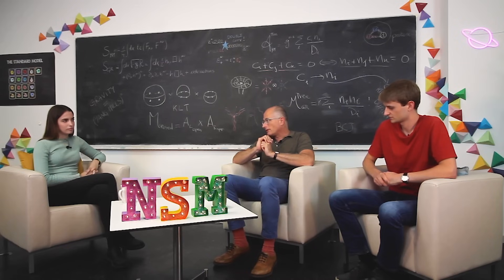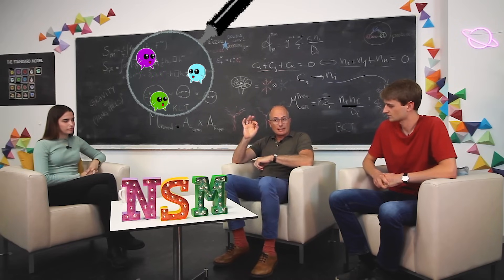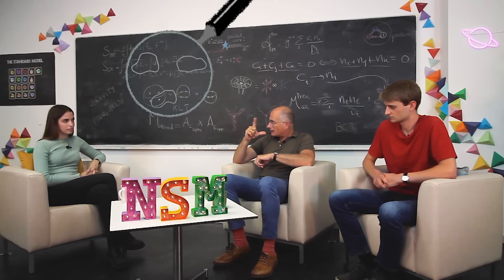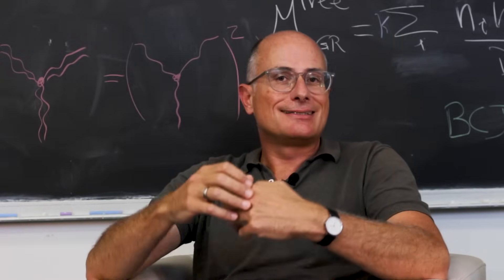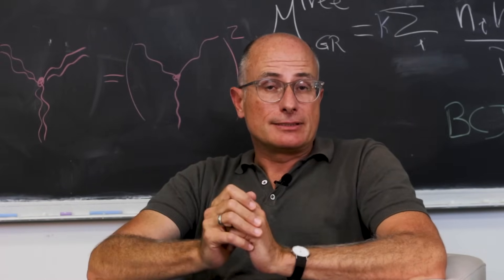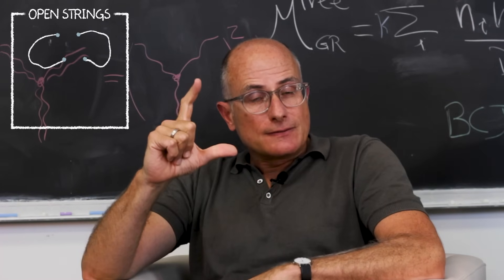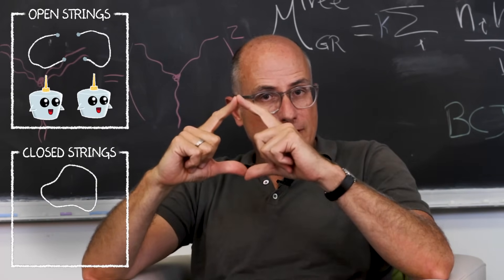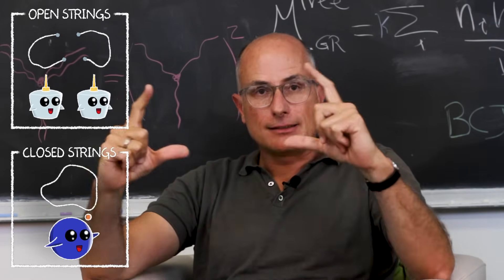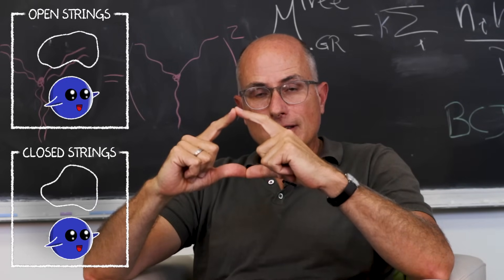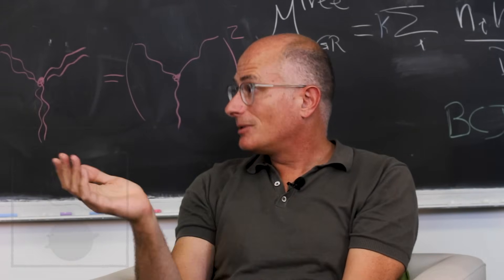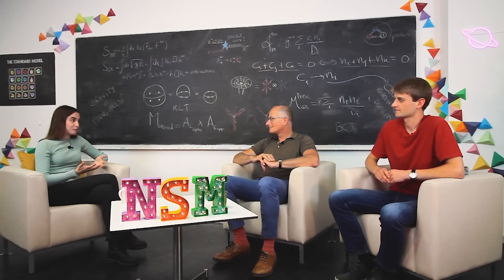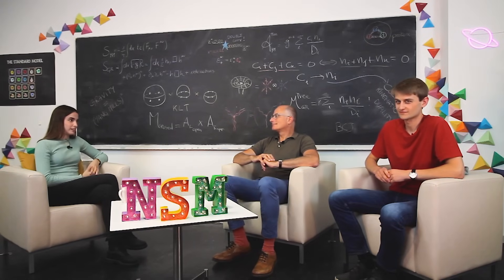Understanding these surprising relations could help us in our quest for understanding the fundamental nature of the interactions in physics, and in particular to unravel the mysteries of the quantum nature of gravity. One such proposal is string theory, which replaces the concept of point-like particles by little strings wiggling with energy. While this theory is still speculative and cannot be tested experimentally at this point, the double copy is naturally and beautifully geometrically built in. The open strings correspond to gluons and the closed strings correspond to gravitons, and you can combine two open strings to form a closed string.